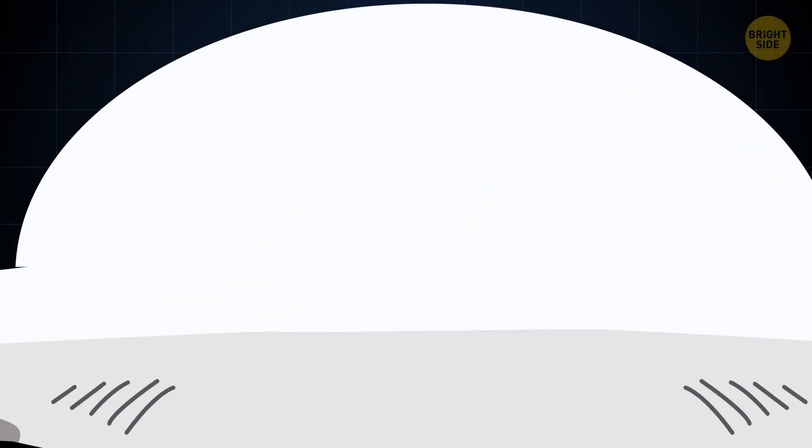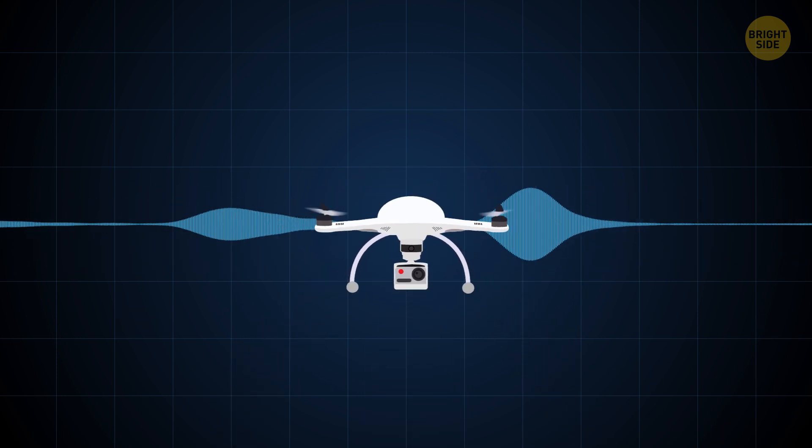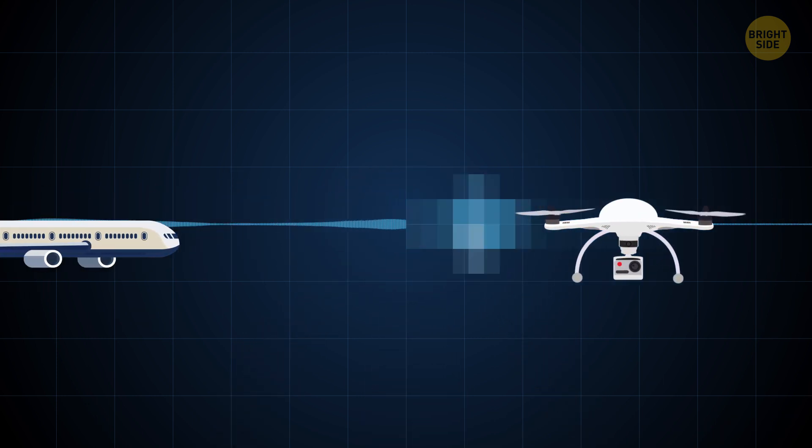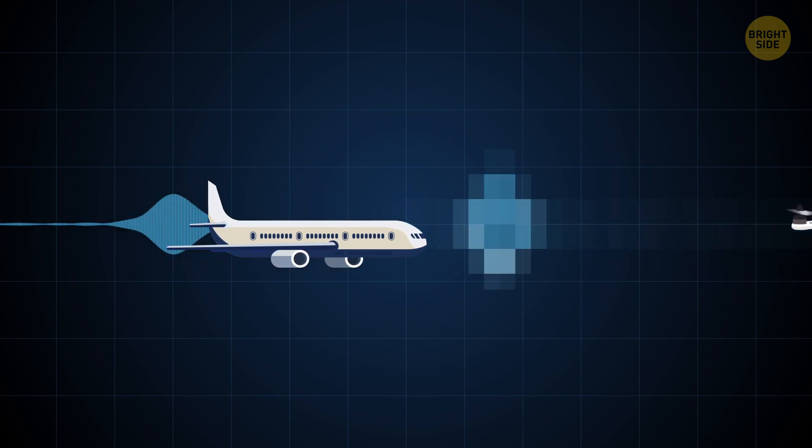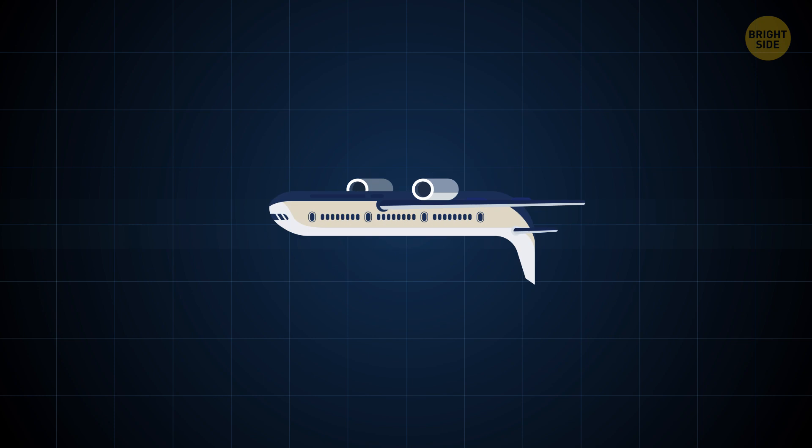But it's not only about the risk of physical damage drones can do to airplanes. They can also cause radio frequency interference. And, in the worst-case scenario, it may lead to pilots losing control of the aircraft and crashing it.